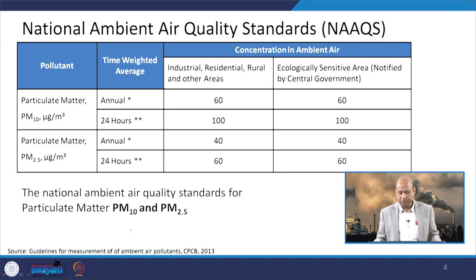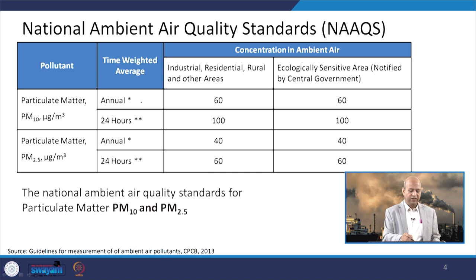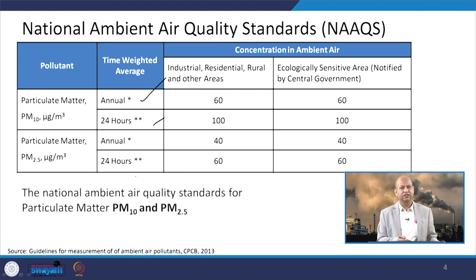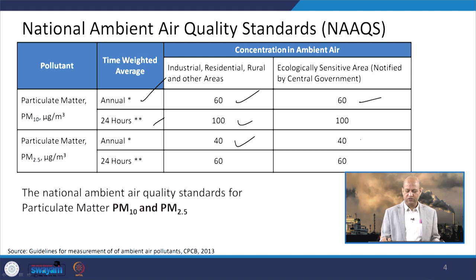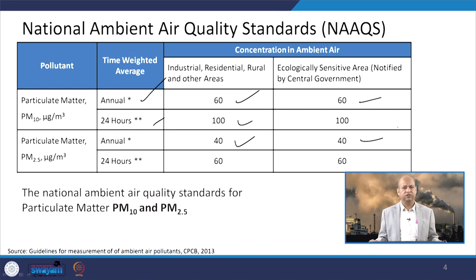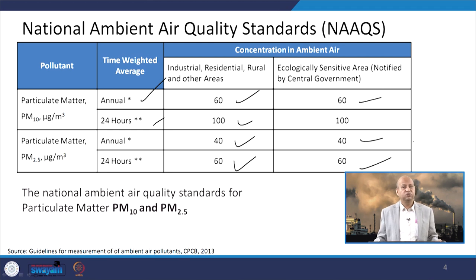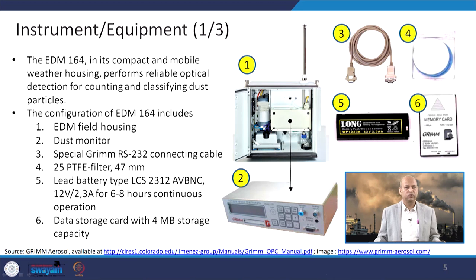The national ambient air quality standards for PM10 and PM2.5 cover annual and 24-hour averages. For industrial, residential, or ecologically sensitive areas, the values are the same. The annual concentration of PM10 is 60 and the 24-hour concentration is 100 in both cases. For PM2.5, the annual concentration is 40 and the 24-hour maximum concentration is 60, and these should not be exceeded at a particular location.